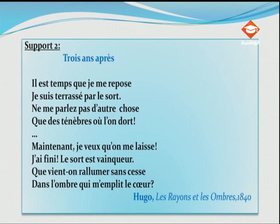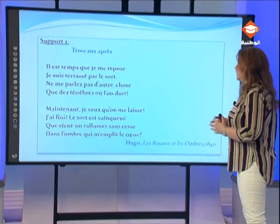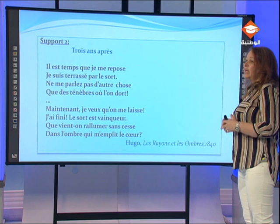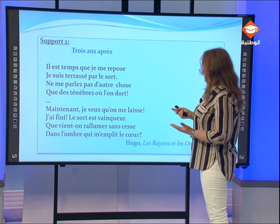Passons maintenant à notre deuxième support. Le poème de Victor Hugo « Trois ans après » est écrit trois ans après la mort de sa fille Léopoldine, et c'est une réponse à son public qui lui demande de reprendre l'écriture.